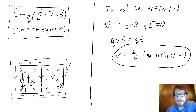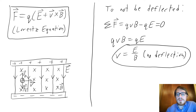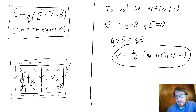All charged particles feel forces due to electric fields; those forces are parallel to the electric field — in the same direction as the field for positive charges, and opposite for negative charges. However, not all charged particles feel a force due to magnetic fields. The direction of the magnetic force can be found using the right-hand rule and is opposite for negative charges versus positive charges.